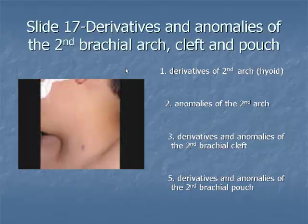Lateral tonsillar fossa sinuses, opening into the tonsillar crypts, likewise develop. A complete fistula, as previously described, is a combined second cleft and pouch anomaly.